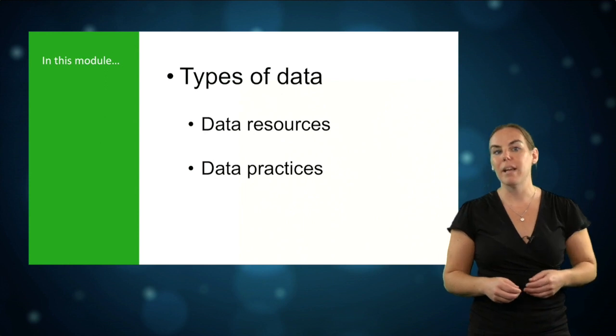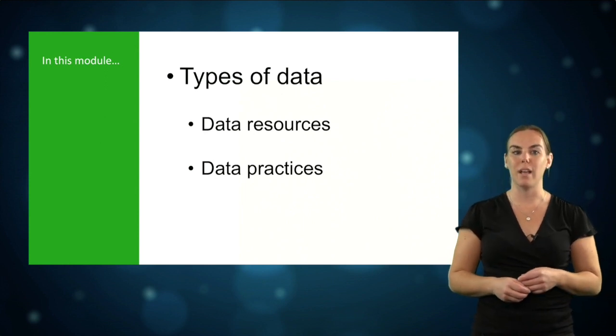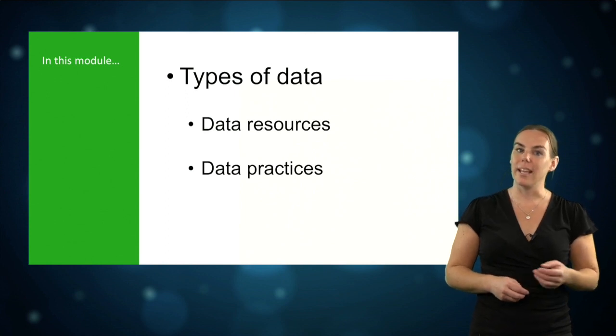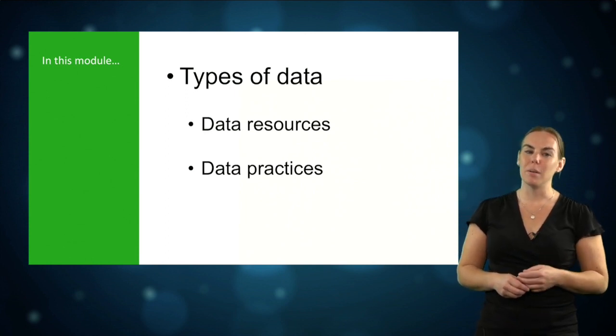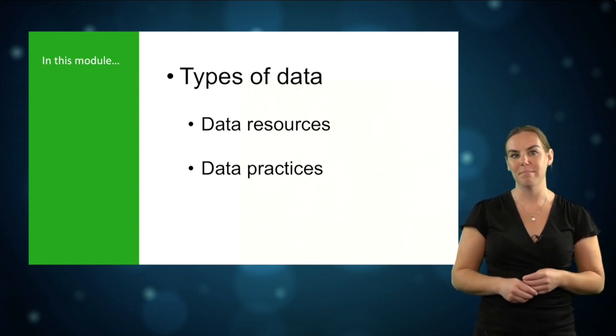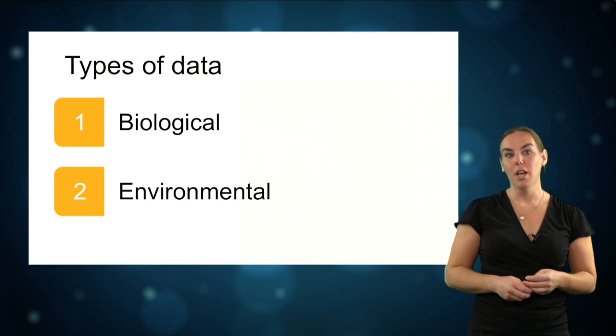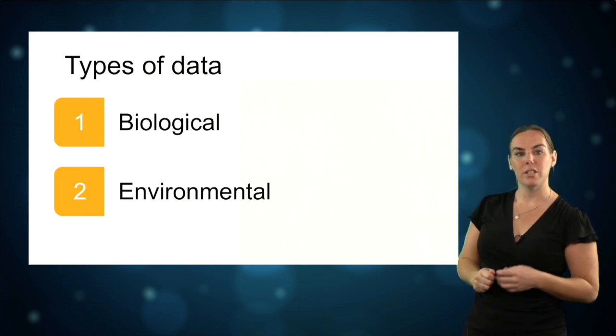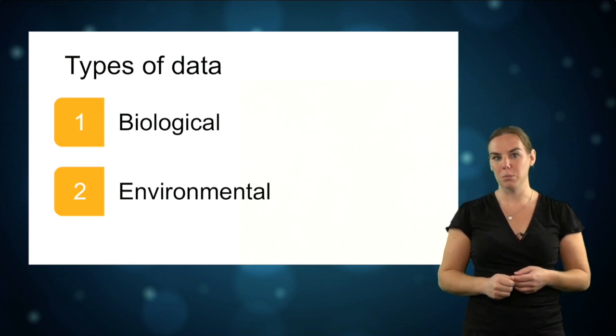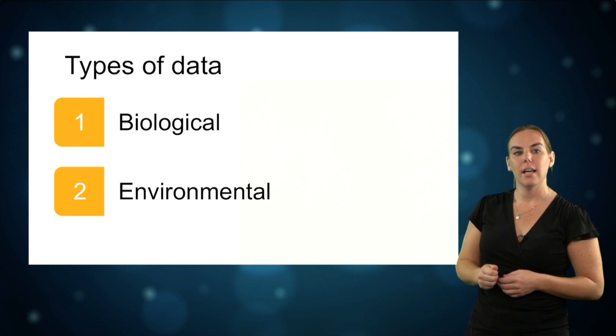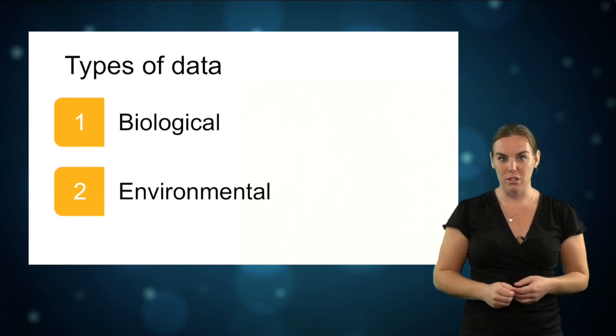In this module, we will have a closer look at the different types of data that you need to run a species distribution model, where to get this data from, things to be aware of, and some good standard practices when dealing with data. To run a species distribution model, you need two types of data: biological data, which are the coordinates of the places where your species of interest occurs, and environmental data that describe the environmental conditions of those places.